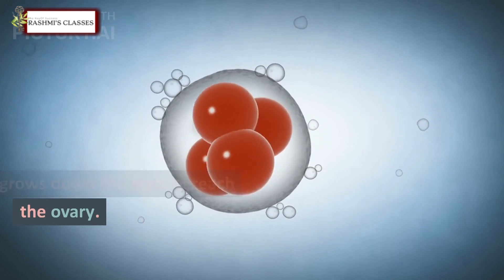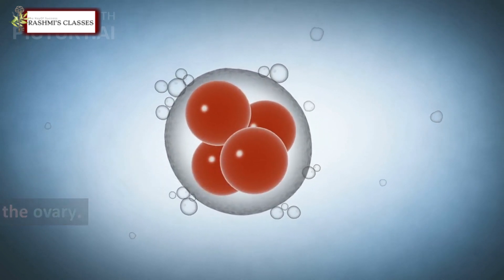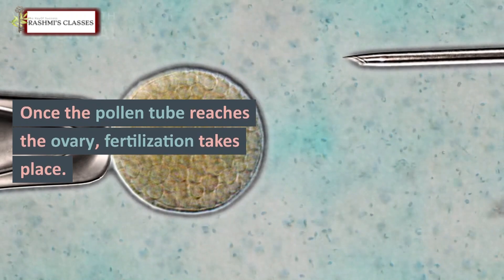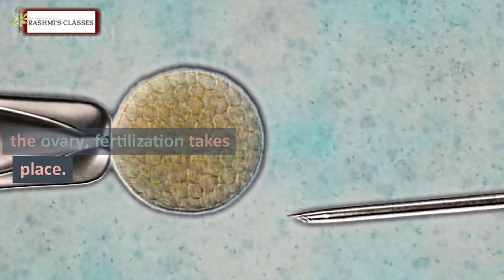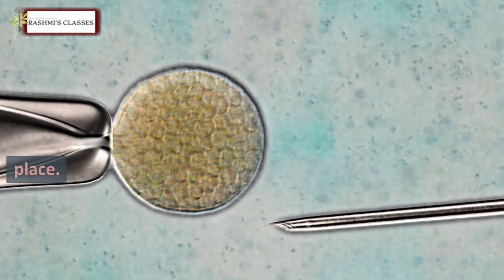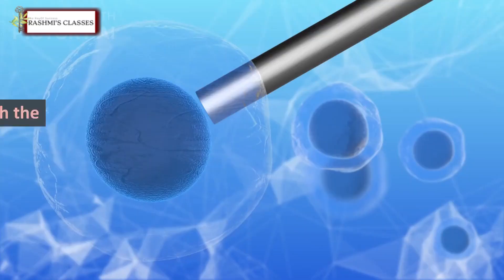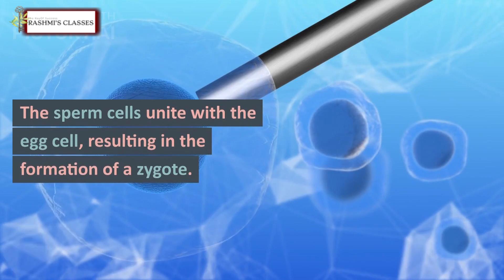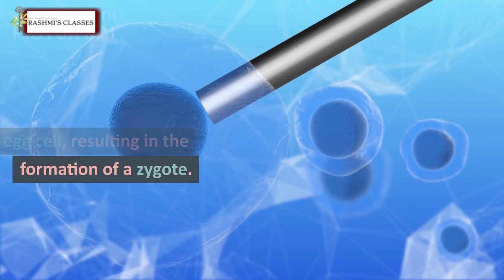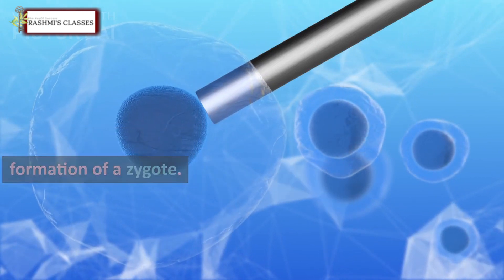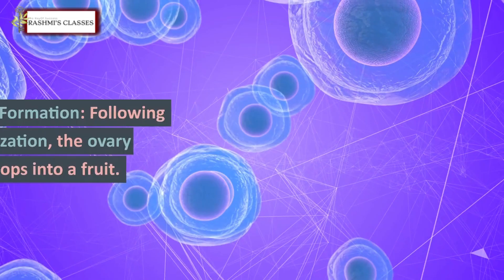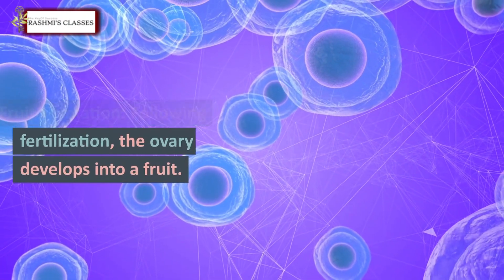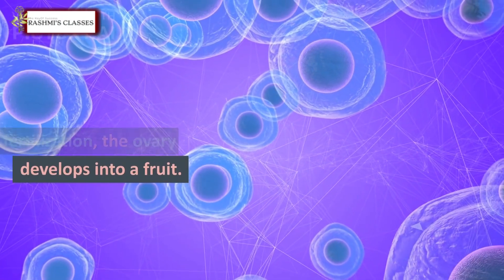After pollination, the pollen grain lands on the stigma and germinates, forming a pollen tube that grows down the style to reach the ovary. Once the pollen tube reaches the ovary, fertilization takes place. The sperm cells unite with the egg cell, resulting in the formation of a zygote.